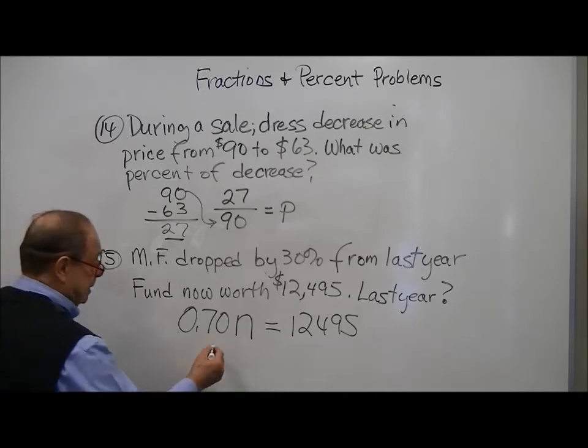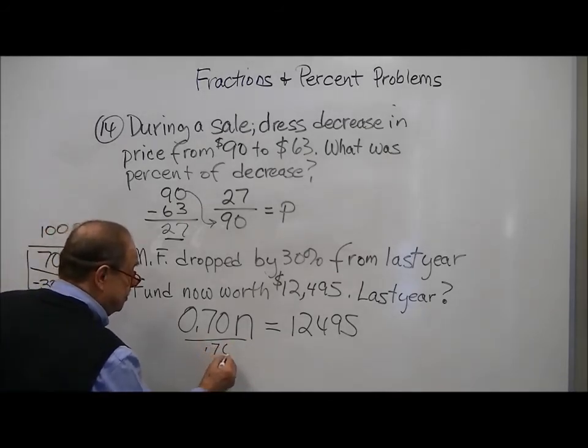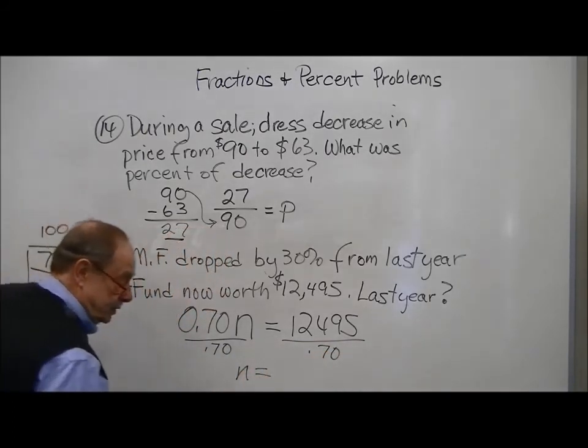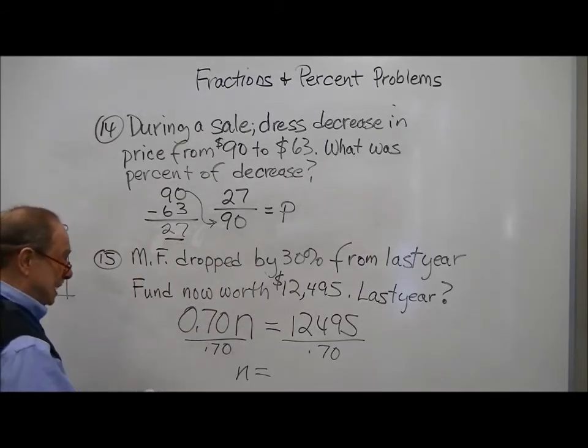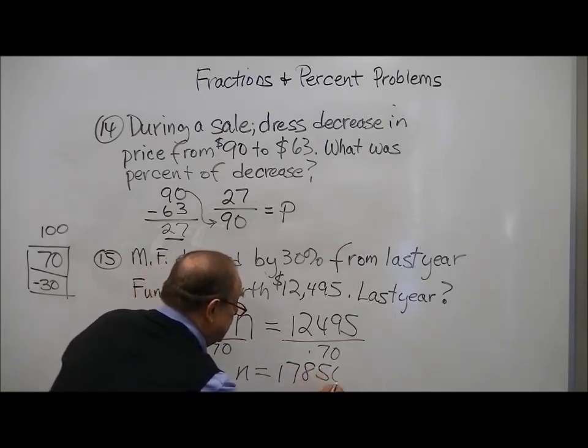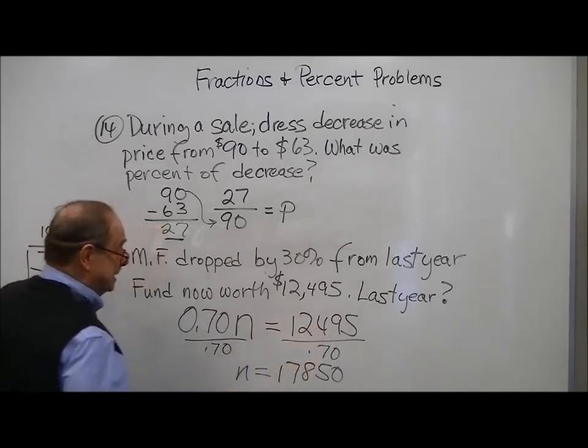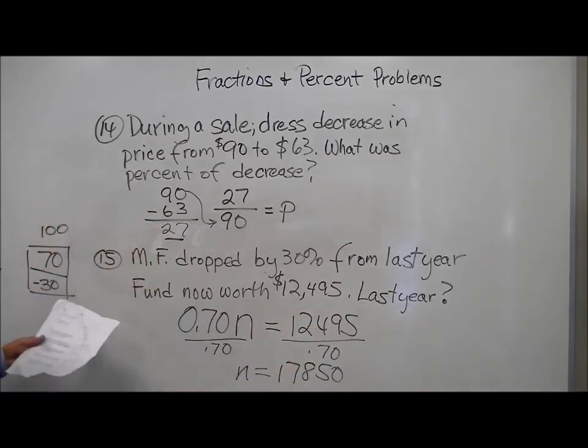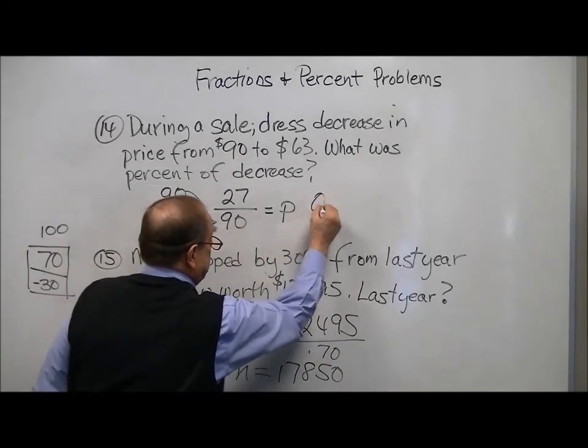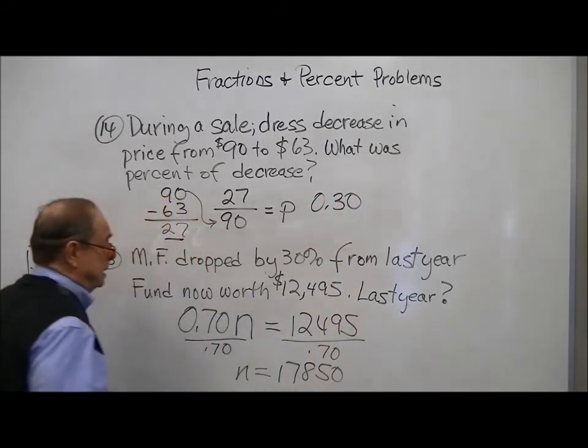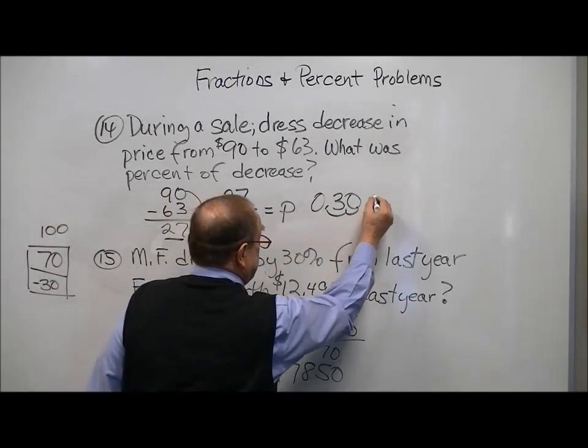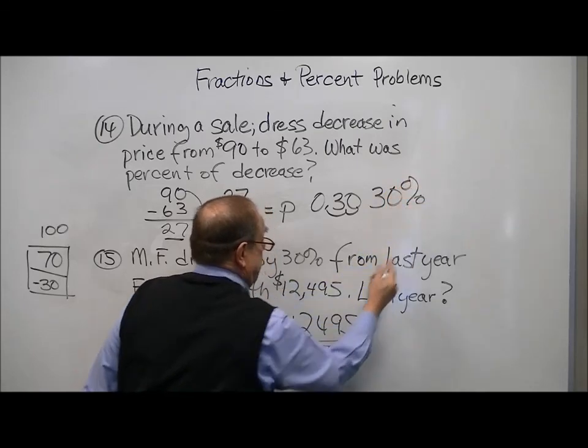So we're going to solve, let's start with this one, by dividing both sides by .70. And when we do that, I happen to have these worked out already, it's going to be 17,850. You can put that in your calculator and check it. And for number 14, when we put this in our calculator, it comes out to .30. And again, they want a percent, so we have to move the decimal place over and add a percent sign. And that wraps this up.